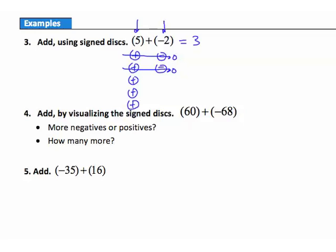Example 4: add by visualizing signed disks — positive 60 and negative 68. It's not efficient to draw all those disks, so I ask two questions. First: do I have more negatives or positives? More negatives. Second: how many more negatives? 68 minus 60 gives 8 more negatives. So after cancellation, I have 8 negatives left. Positive 60 plus negative 68 equals negative 8.